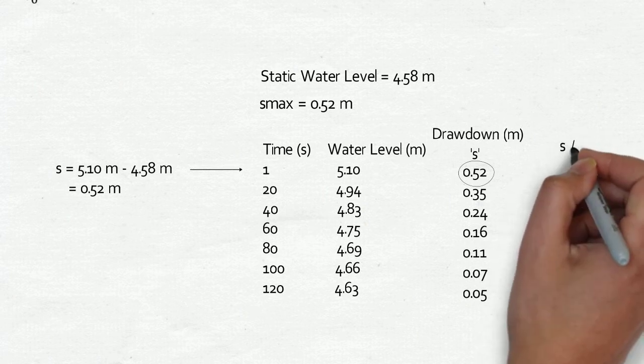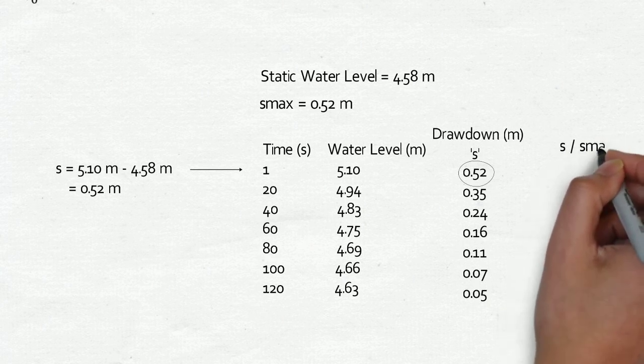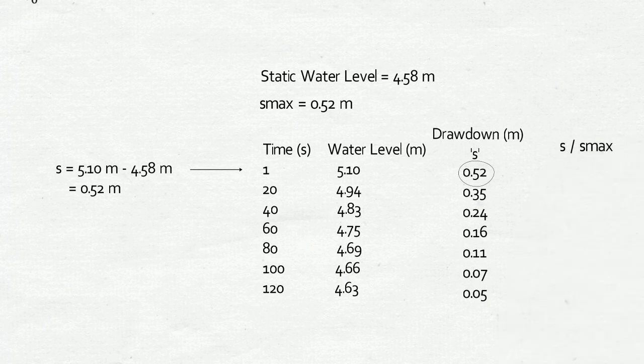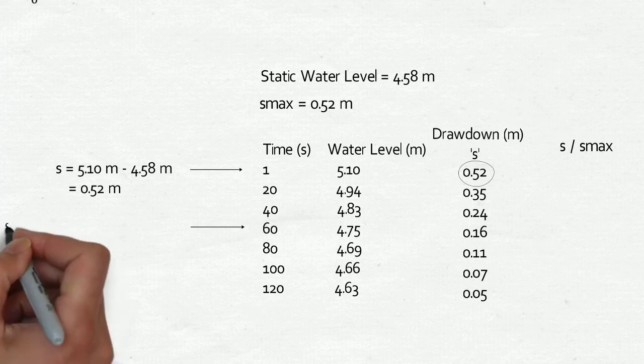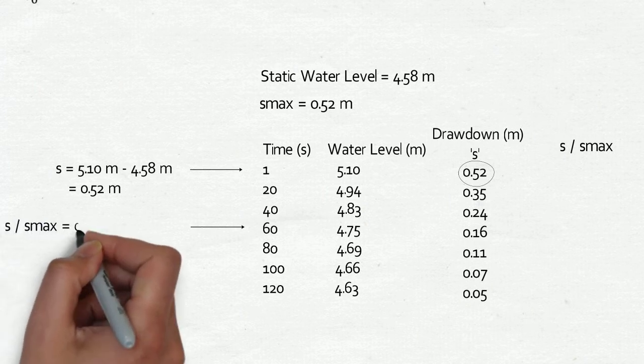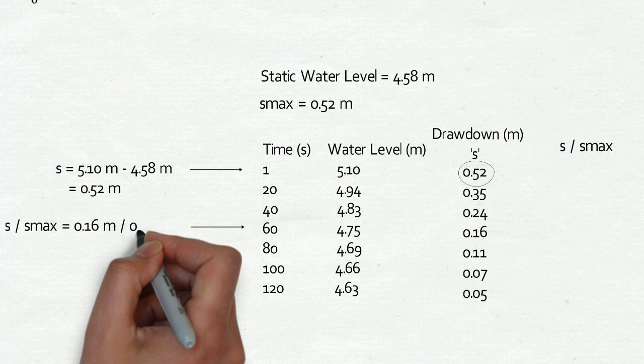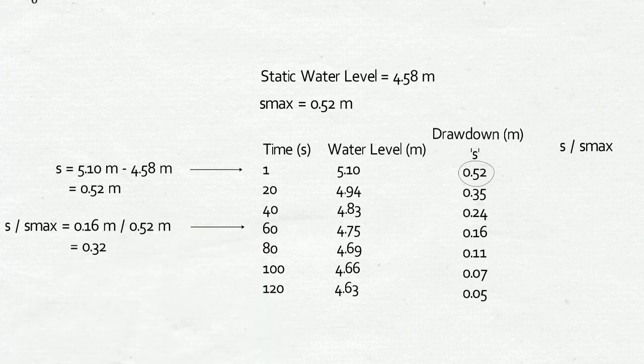Now make a fourth column labeled S over S max, the drawdown divided by the maximum drawdown. Calculate the fourth column of data as the observed drawdown at each time divided by the maximum drawdown. This normalizes the data to values between zero and one. The calculation for time equals 60 seconds is 0.16 meters divided by 0.52 meters equals 0.32.